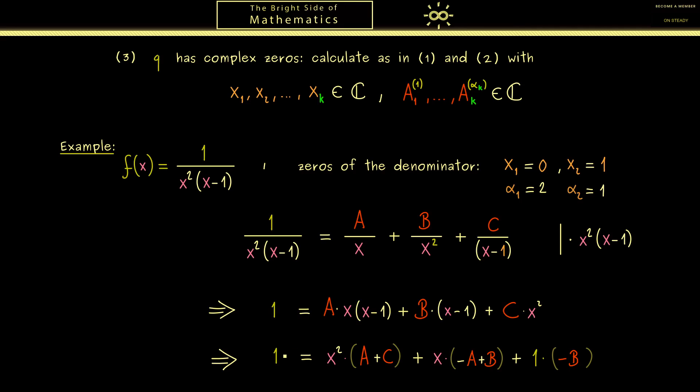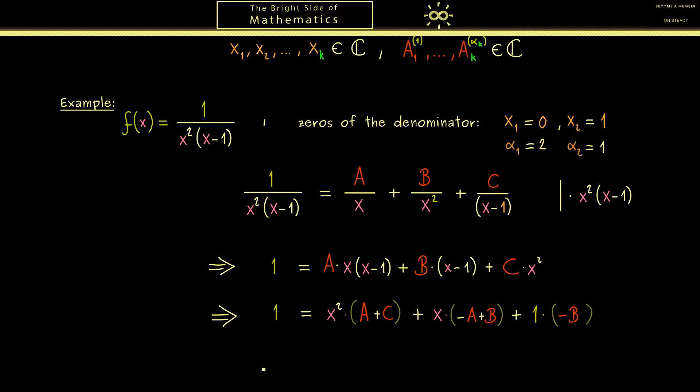And now we can just compare the coefficients on the left hand side to the coefficients on the right hand side. In other words this one should be 0, this one should be 0 and this one should be plus 1. And indeed the best thing you can do is to write this immediately as a system of linear equations.